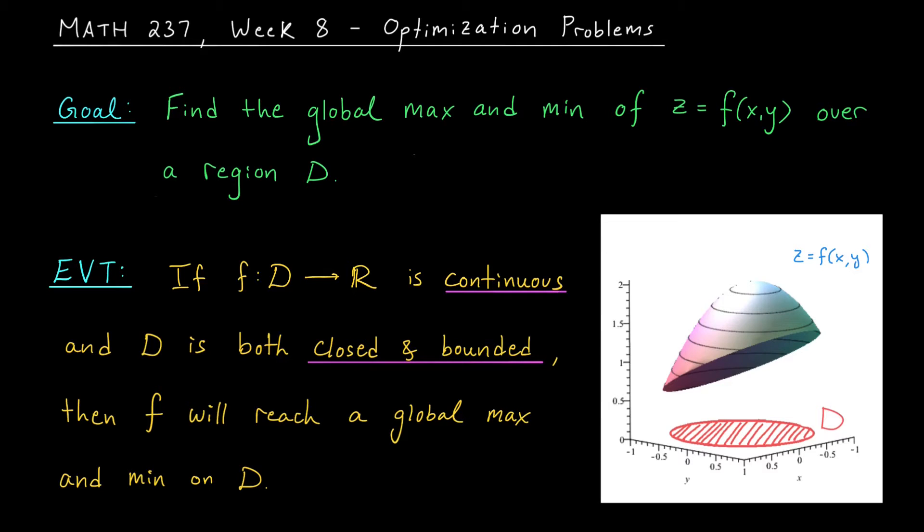This week was all about optimization. We spent some time learning about how to find the global max and min of a function, z equals f(x,y), throughout some specified region D in the xy plane.